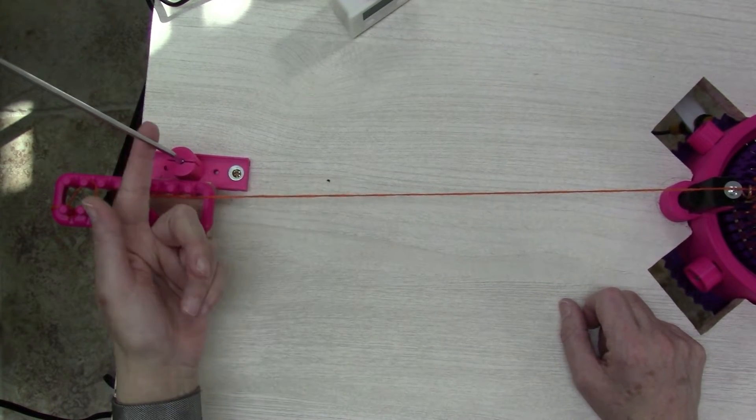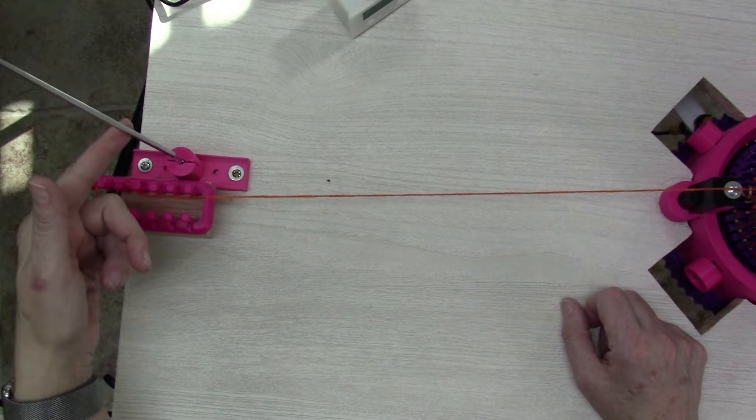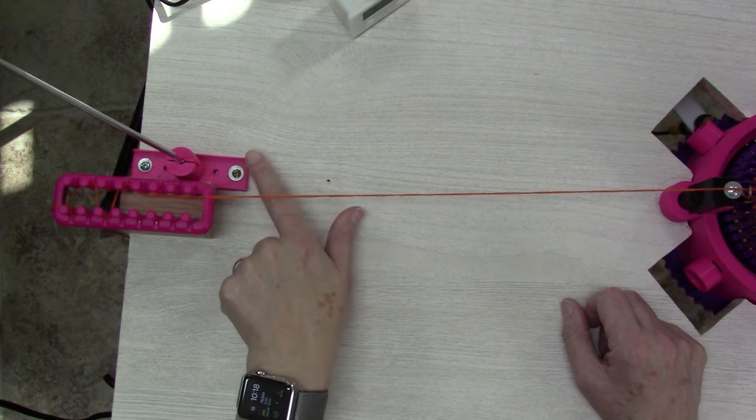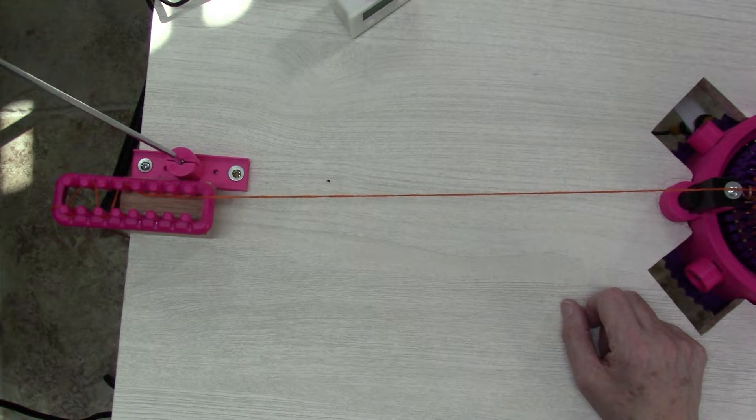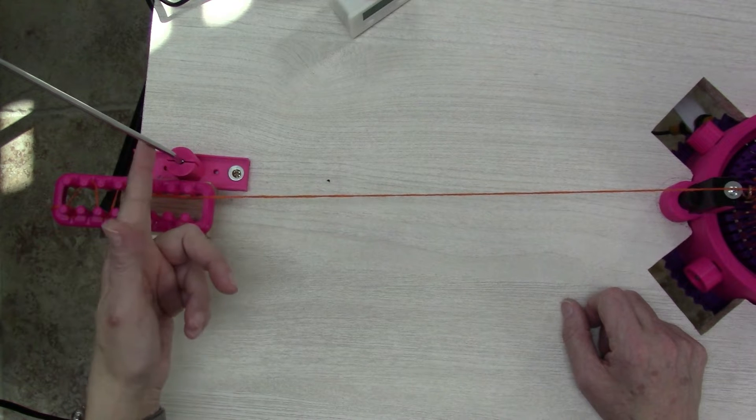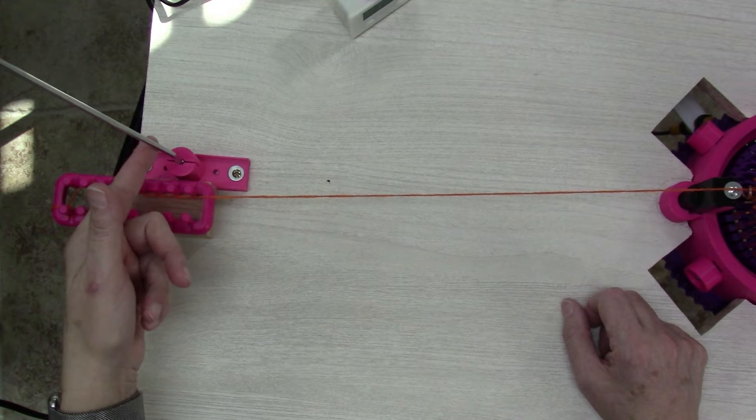But if you don't have a tension mast, like I'm using one from one of my flatbed knitting machines, I printed up a bracket to attach it to my table and I have a video on that. But if you don't want to spend any more money on this machine buying a tension mast or anything like that,